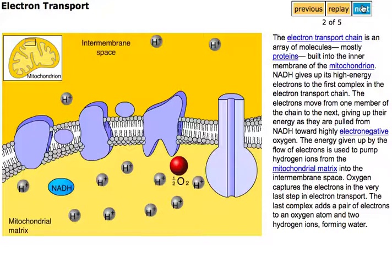NADH gives up its high energy electrons to the first complex in the electron transport chain. The electrons move from one member of the chain to the next, giving up their energy as they are pulled from NADH toward highly electronegative oxygen.